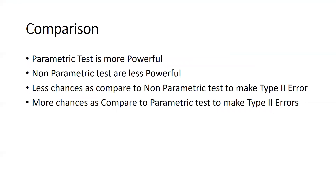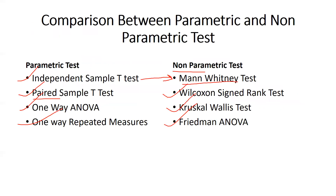When we compare parametric and non-parametric tests, one of the most important differences is that the parametric test is more powerful. Non-parametric tests have less chances as compared to parametric tests to make type 2 error. This table shows which non-parametric test replaces which parametric test: independent sample t-test is replaced by Mann-Whitney U-test; paired sample t-test (dependent sample) is replaced by Wilcoxon signed-rank test; one-way ANOVA is replaced by Kruskal-Wallis test; and one-way repeated measures ANOVA is replaced by Friedman ANOVA.